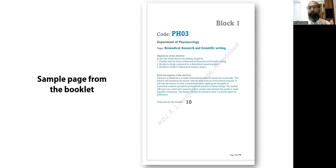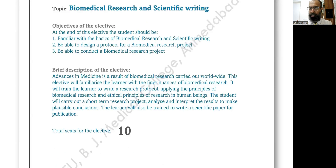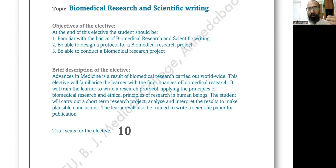This is a sample page from that booklet. For each elective, we are giving you details — for example, it is a block one elective, the code is PH03, offered from the Department of Pharmacology, about biomedical research and scientific writing. The objectives of this elective are listed, along with a brief description. The total seats are 10, so 10 students, depending on their merit, can get into this elective. For two weeks, they will be attending the Department of Pharmacology with a special focus on biomedical research and scientific writing.